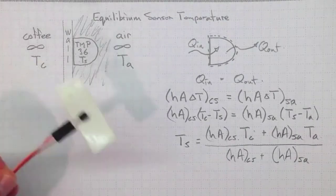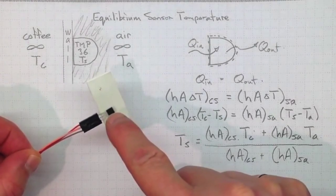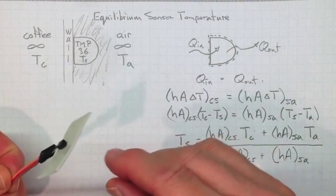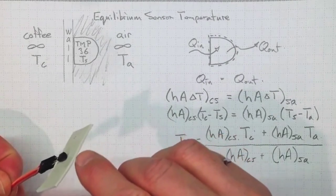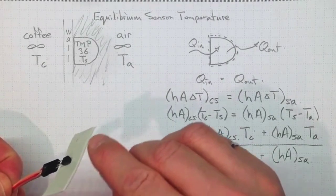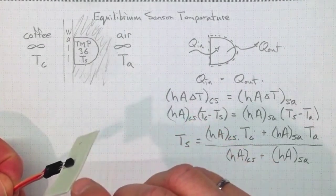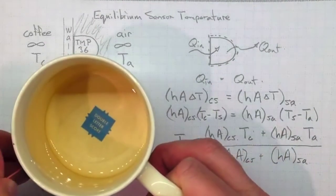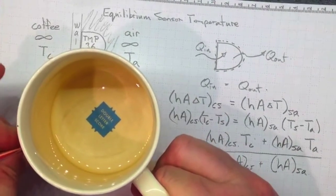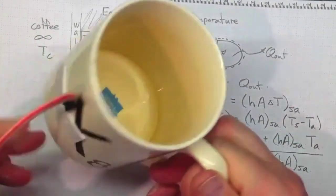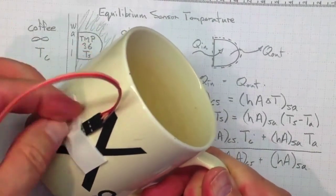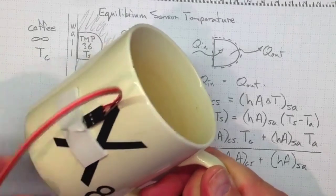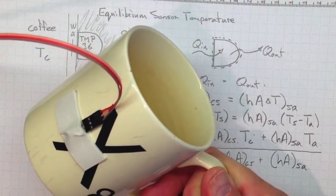For example, if I wanted this TMP36 sensor to be closer to the temperature of the coffee in my cup, I could mount it onto the cup with this foam back tape that would act as a little bit of insulation to keep the air from interacting with it as effectively as the cup interacts with it. So I could put that on there like that, and that would probably give me a closer match between the temperature of my sensor and the temperature of the cup. And that's a technique you might try in the lab.